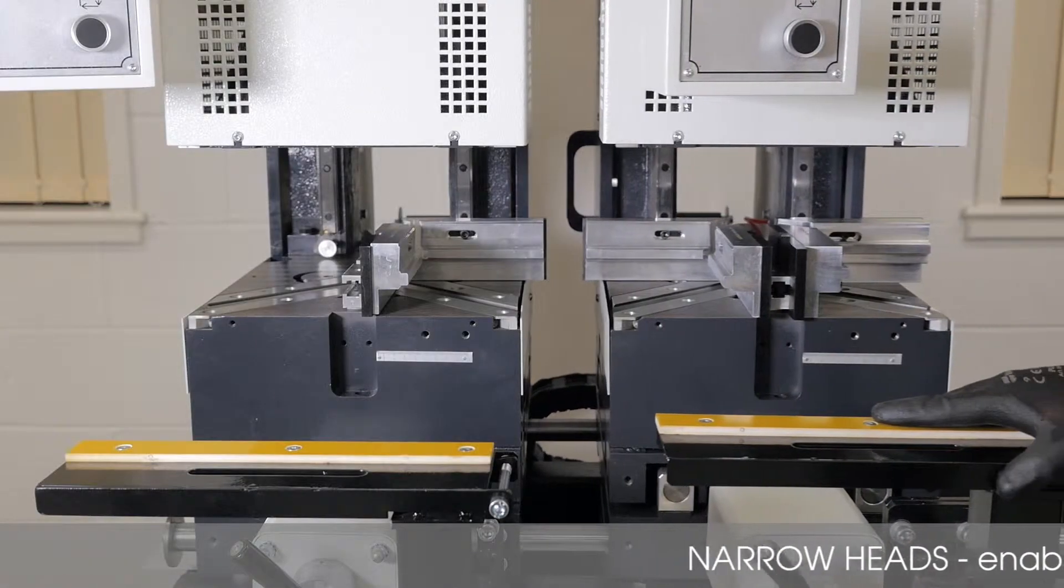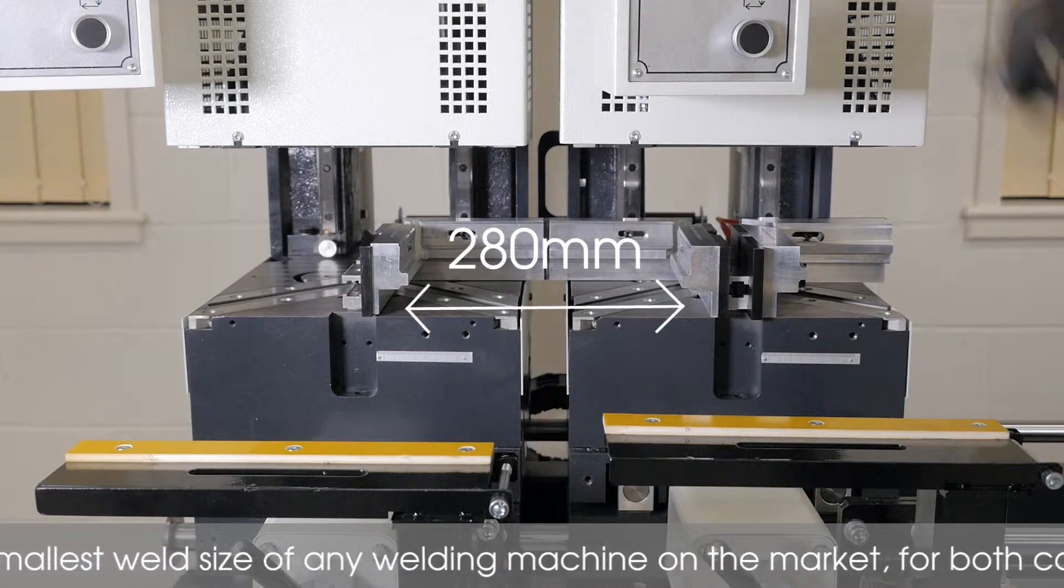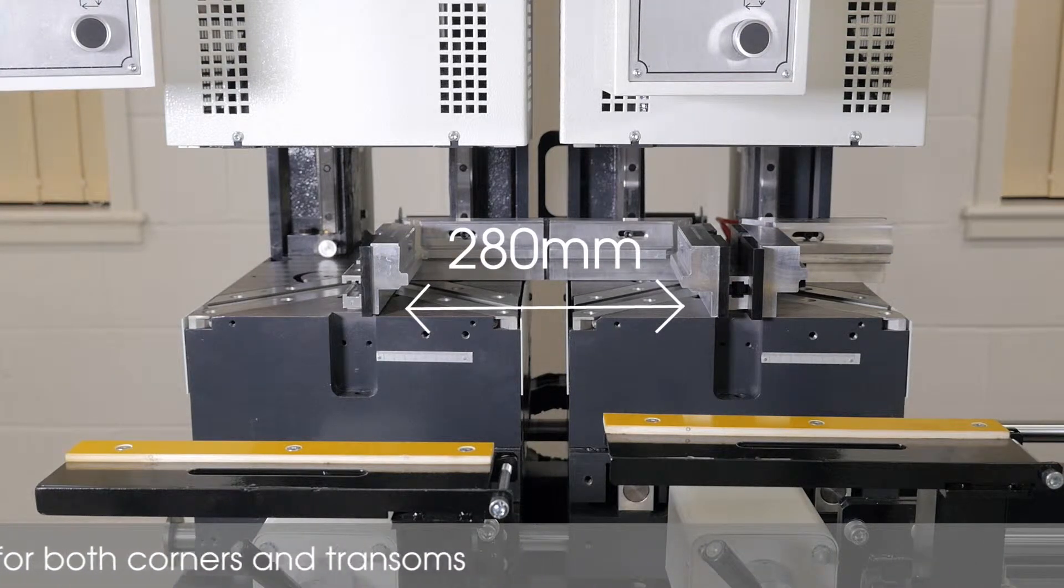The heads have been designed to be narrow enabling the smallest weld size of any welding machine on the market for both corners and transoms.